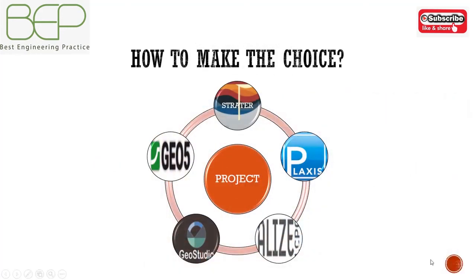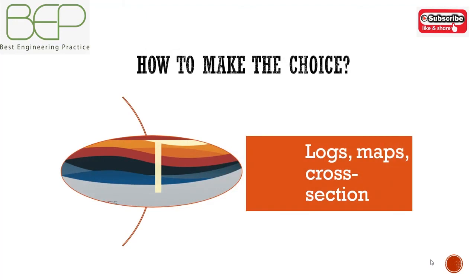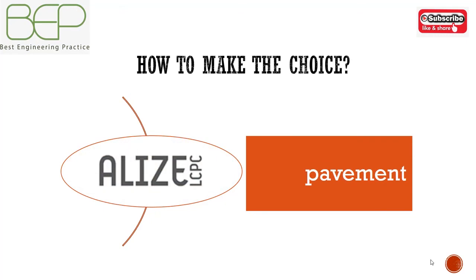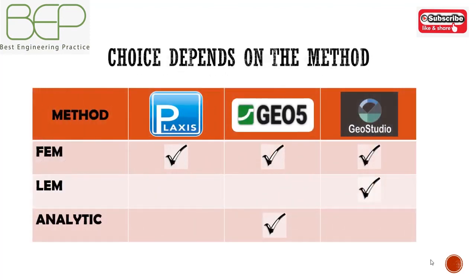How do you make the choice of geotechnical software? To make a choice, we should base our decision on many criteria. To represent the logs, maps, and cross-sections of a site, it is better to use Strata, with the latest version being Strata 5. For pavement design, you should use Alize, which is one of the most widely used software tools around the world — though Alize is available only in French. The choice among the other three software tools depends on many factors. The first criterion is the method: the three main methods used in those software tools are the finite element method, the limit equilibrium method, and the analytical method. Plaxis is only based on the finite element method.